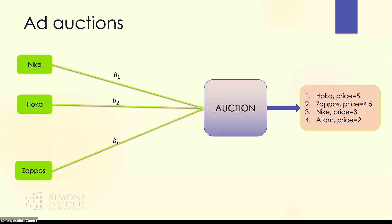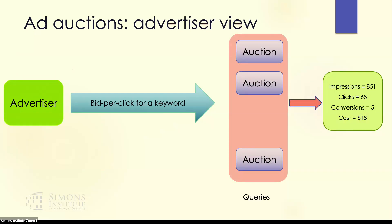The common auction used for selling a single item is the second price auction, or the Vickrey auction, in which the item is given to the highest bidder for a price equal to the second highest bid. From an advertiser's perspective, they're not really participating in just one auction. They're typically bidding for a keyword, submitting a per-click bid for the keyword, and participating in all relevant queries using that bid. What they get in the end is a total number of impressions, clicks, conversions, and costs.